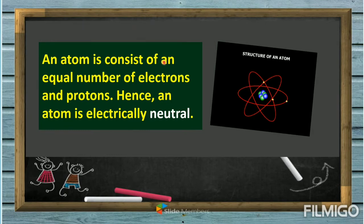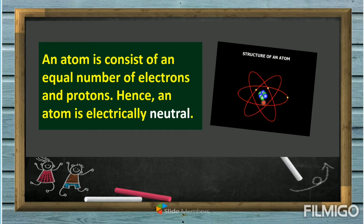An atom consists of an equal number of electrons and protons; hence, an atom is electrically neutral. For example, the blue color inside the nucleus represents the number of protons. If there are three protons, there are also three electrons — that is why an atom is electrically neutral.